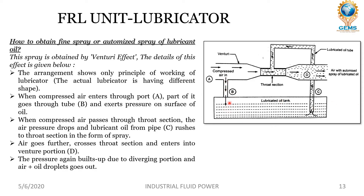When air flows through port B, it rushes and exerts excess pressure so that through passage C the lubricating oil flows to the small throat section and rushes in the form of spray. As the air crosses the throat section and enters into venturi position D, the spray mixes with the air. When it comes to the D section, air with atomized spray of lubricated oil is obtained. The pressure again builds up due to the divergent portion and air plus oil droplets go out.